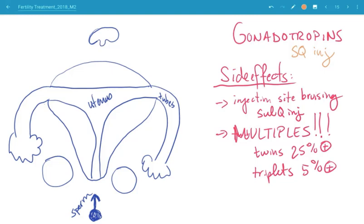These are sub-Q injections, and bruising is the most common side effect. Injections are usually done on the abdomen, lower abdomen. Obviously the big risk here that we alluded to earlier was the risk of multiples. The twin rate with this drug in patients with unexplained infertility is as high as 25%, and could be even higher depending on the age of the patient and the indication. The baseline triplet rate is about 5% and again could be higher depending on the age of the patient and the indication.